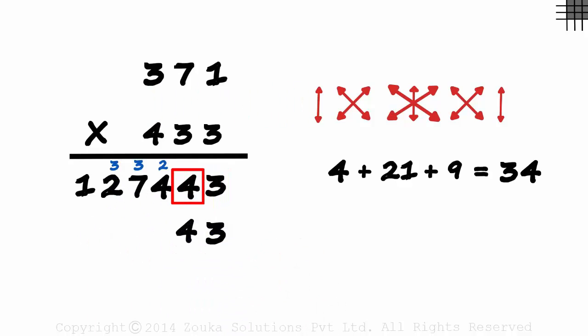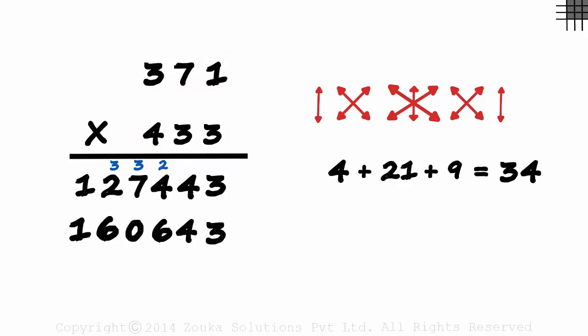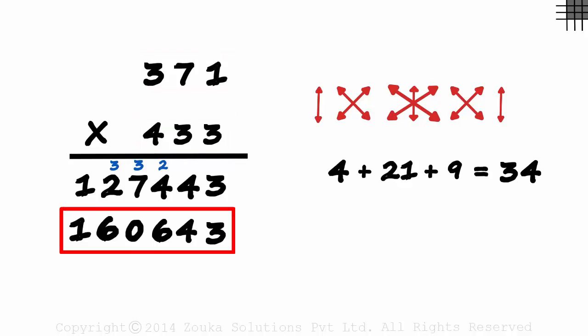And the last product is 3 times 4 which equals 12. 3, 4. 2 plus 4 is 6. 3 plus 7 is 10. 0 and a 1 carried over. 1 plus 3 plus 2 is 6. And we write the 1 here. 371 times 433 equals 160,643. It becomes so easy with the palindrome approach. 1, 2, 3, 2, 1.